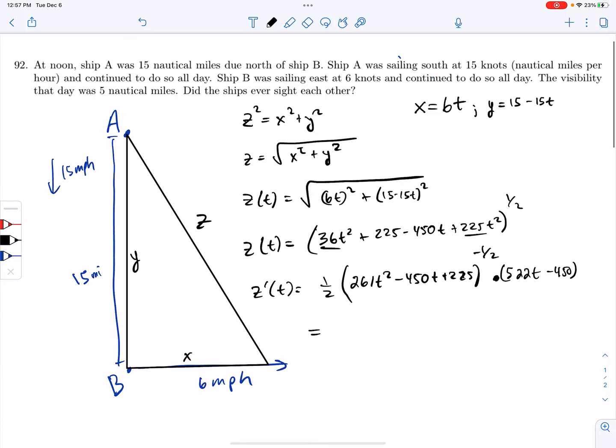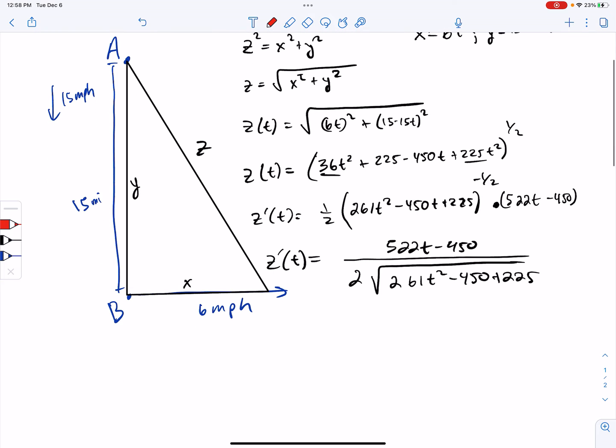Okay. So rewriting this all, just simplifying things a little, 522T minus 450 will be in the numerator. And then I have this two from the one half and then square root of everything that's in that parentheses, 261T squared minus 450T plus 225. Okay. So I've got the derivative of my Z function. Now this looks pretty complicated to minimize here. The good news is that for a fraction, when I minimize, I set the derivative equal to zero.